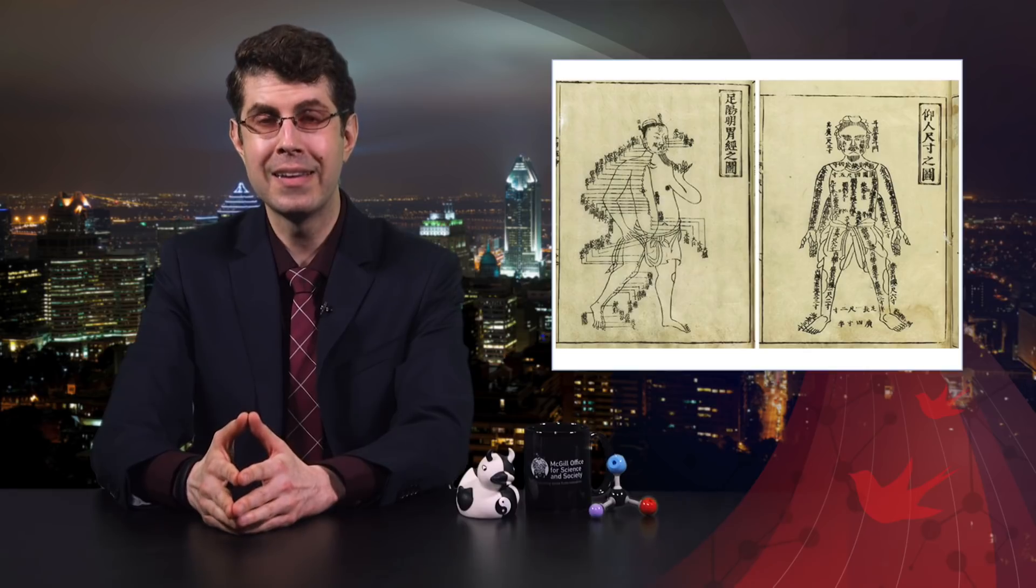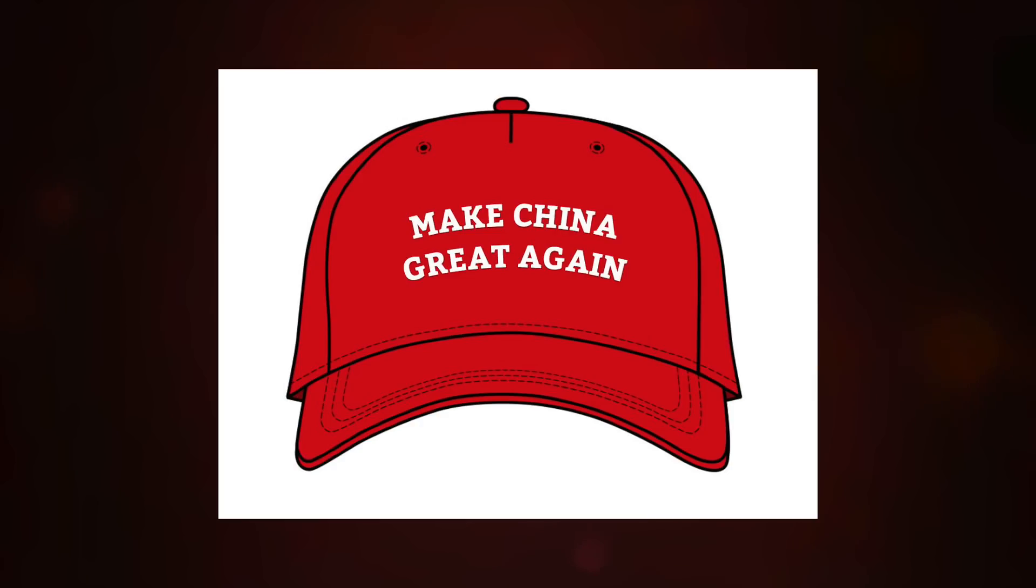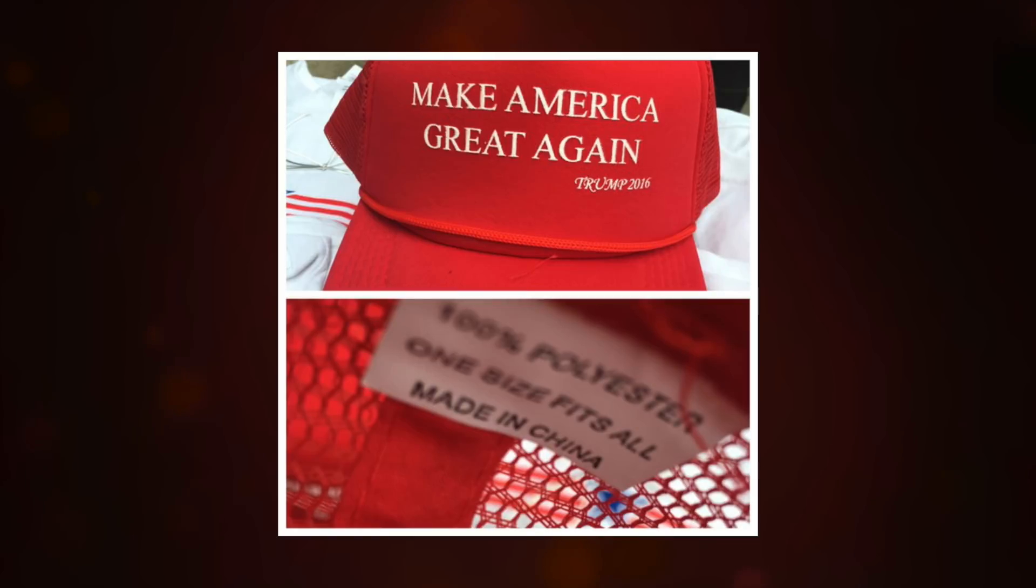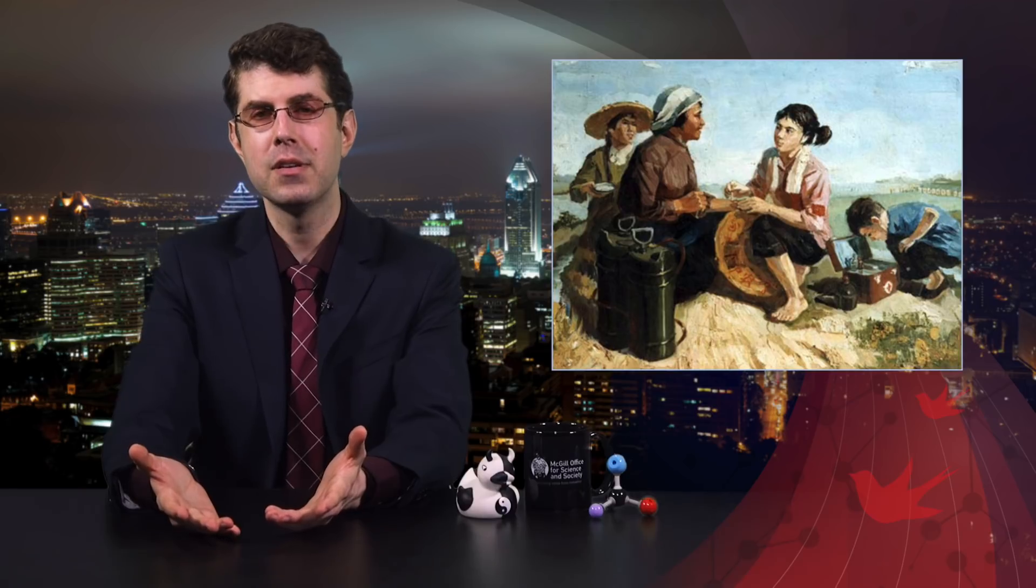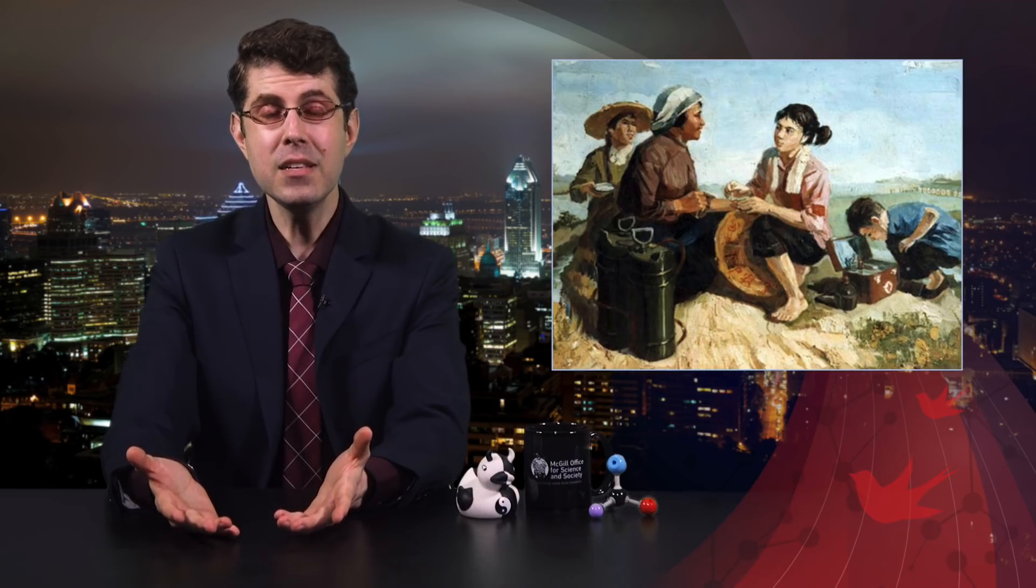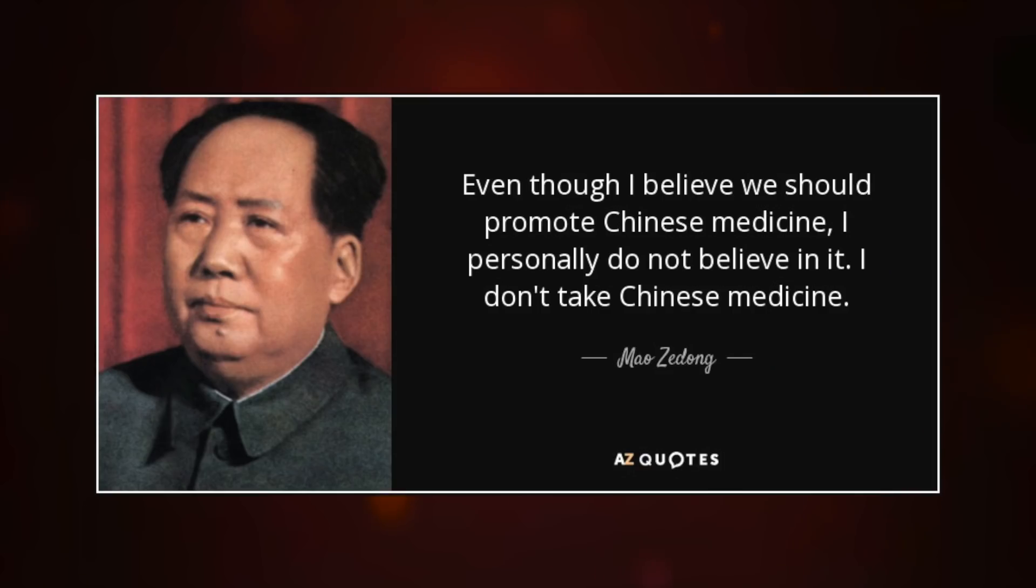Acupuncture made a resurgence in China in 1949 during Chairman Mao Zedong's Communist Revolution. He wanted to make China great again and offer his people a medicine that was essentially made in China. He also wanted the people living in the countryside to have some sort of medicine to turn to, but didn't have the money to give them actual doctors. So he brought acupuncture back into fashion, despite the fact that he didn't believe in it. He even told his own physician, even though I believe we should promote Chinese medicine, I personally do not believe in it. I don't take Chinese medicine.